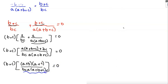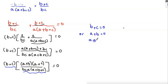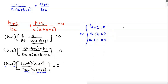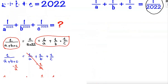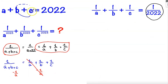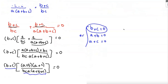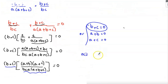The denominator cannot equal zero, so either b+c = 0, or a+b = 0, or a+c = 0. Consider each case using our given equation a+b+c = 2022. If b+c = 0, then a = 2022, so 1/a = 1/2022.